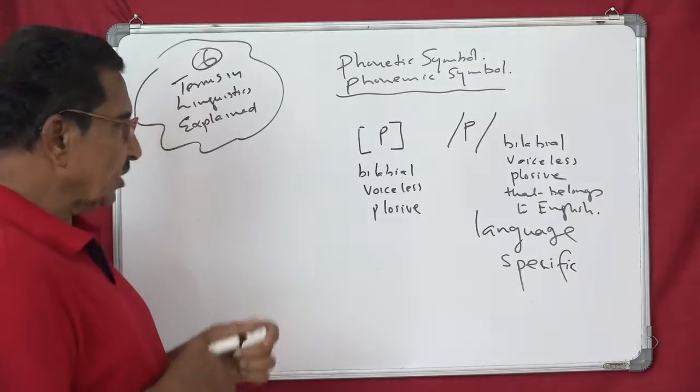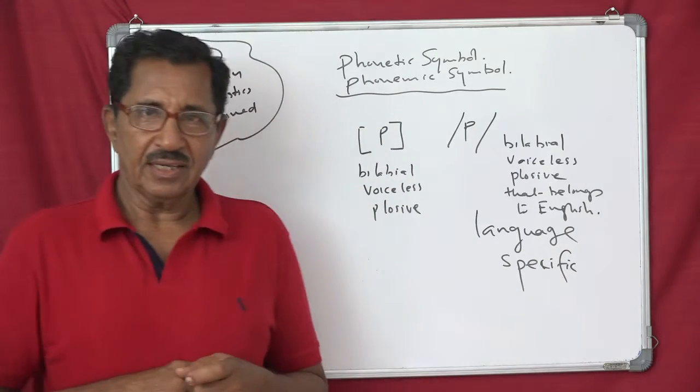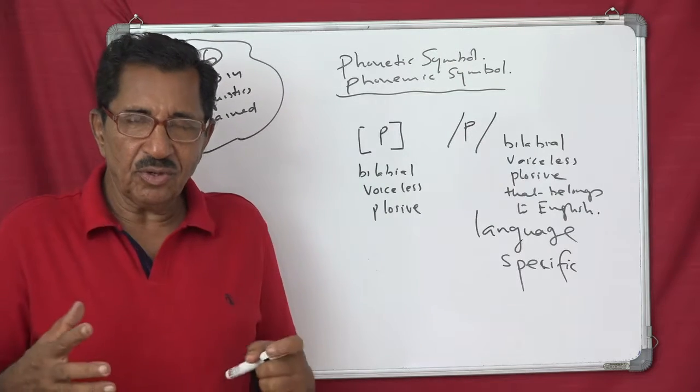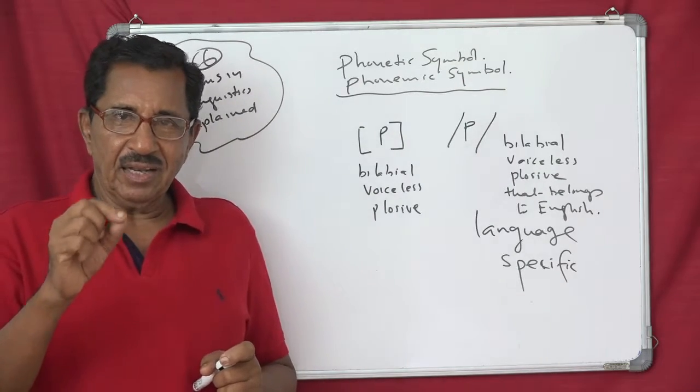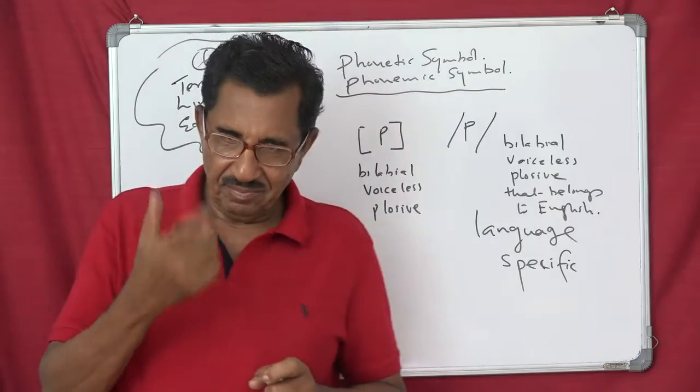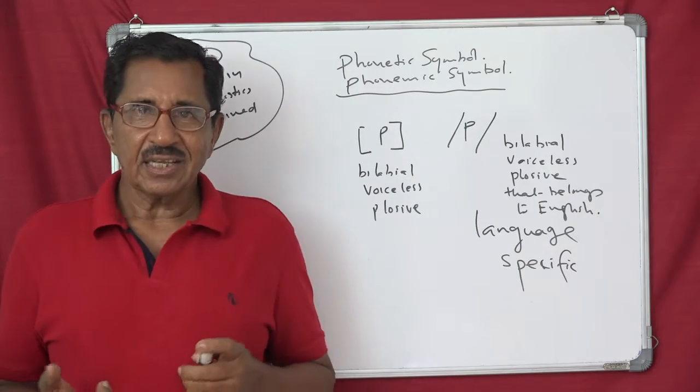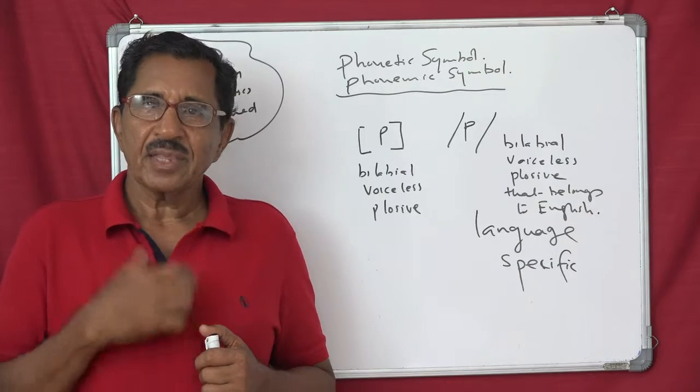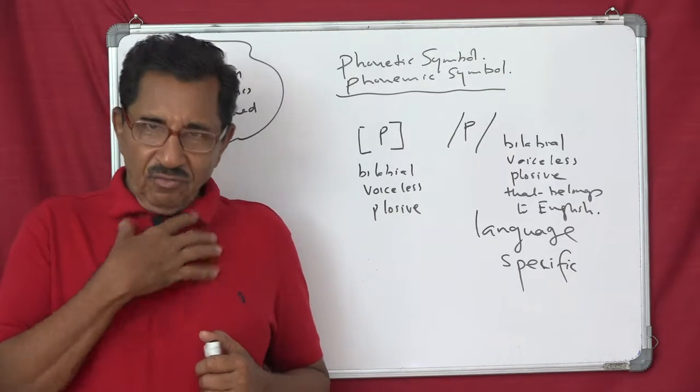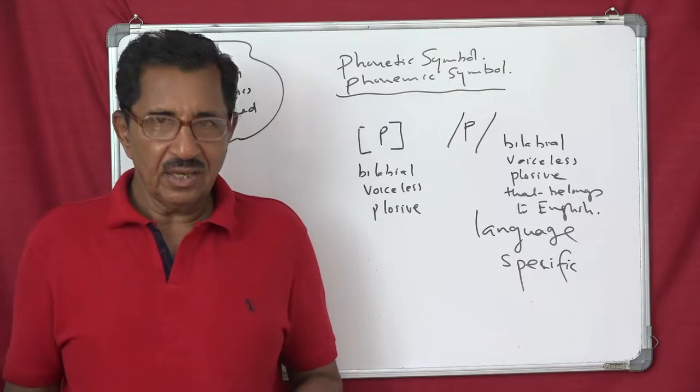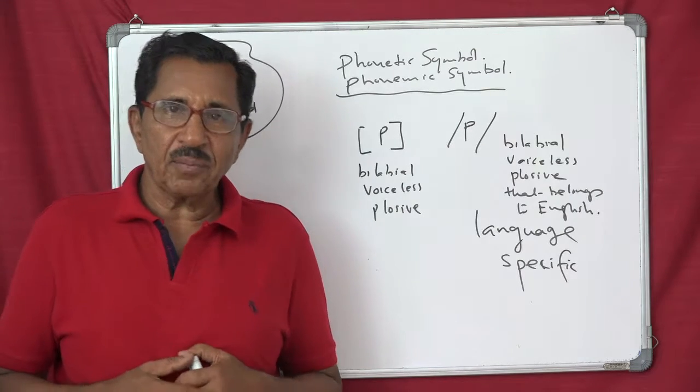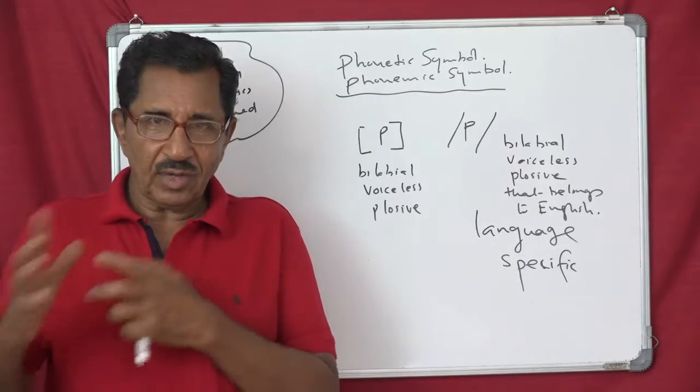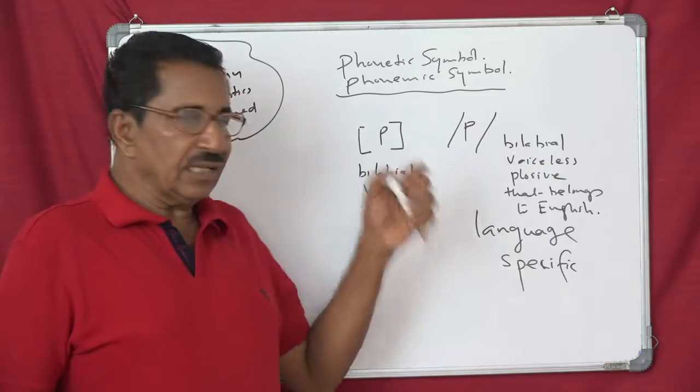A phonetic symbol is not language specific. It is free. It just tells you that I am a bilabial, my mechanism of production, that is the place of articulation, that is the place of articulation is two lips, then vocal cords don't vibrate, so it is voiceless, plosive, because you hear a plosive sound. It does not say that it belongs to language.